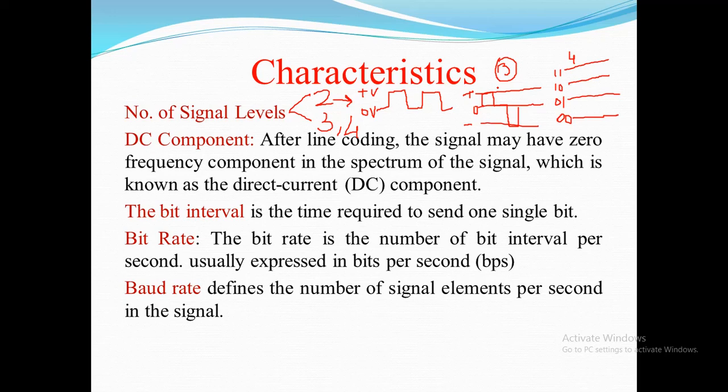Bit interval refers to the time required to send one single bit - that is, how much time is needed to transmit one bit. Bit rate means the number of bit intervals per second, and this is measured in bits per second (BPS). Baud rate defines the number of signaling elements per second in the signal. Baud rate can be less than or equal to the bit rate.